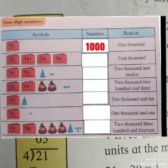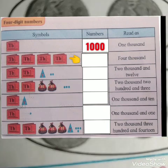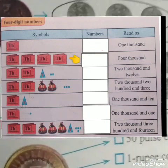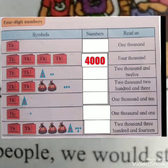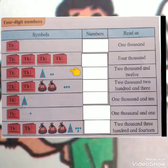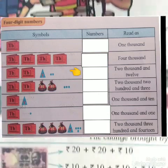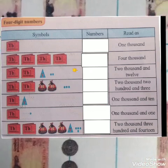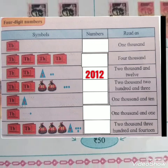See the second row. It is showing 4,000 symbols, so we are writing in the box: 4,000. See the third row — it is showing 2,000 symbols, so we are writing in the box: 2,000.